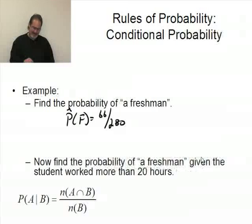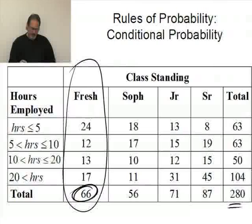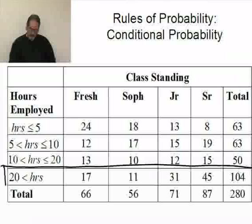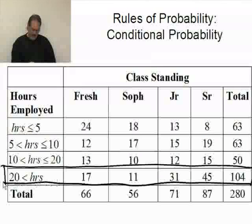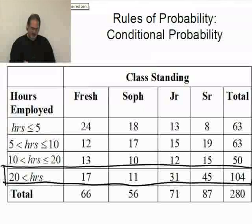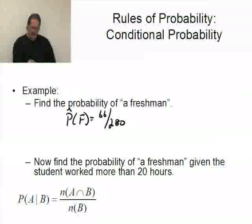What's the probability of a freshman given the student worked more than 20 hours? Well, given the student worked more than 20 hours, I'm thinking this as my universe. I'm saying this did occur. So anything else that can possibly occur must be in here. How many ways can a freshman happen? That's 17. So the probability of a freshman being chosen out of this data, given they worked more than 20 hours, is 17 over 104.